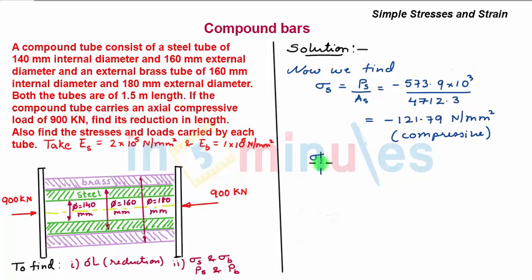Similarly, sigma B equals PB over AB. So PB is minus 326 times 10 to the power 3 Newtons over area 5340.7, which comes out to minus 61.04 Newtons per mm squared. Again, the negative sign indicates compressive stress.